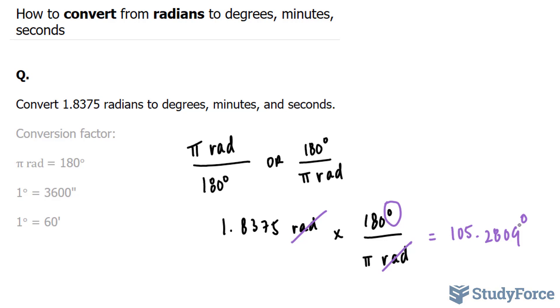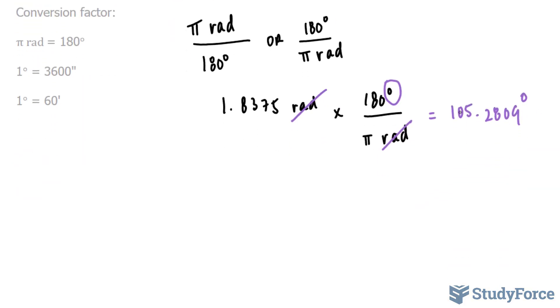Our next conversion is to go from degrees to degrees, minutes, seconds. To do that, what you would do is only use this part of the degree, the decimal portion. The decimal portion of the degree is 0.2809 degrees.